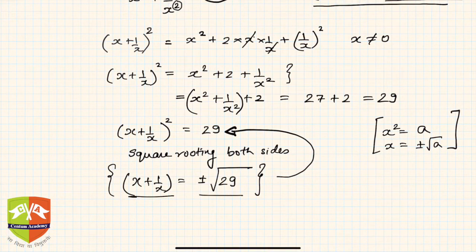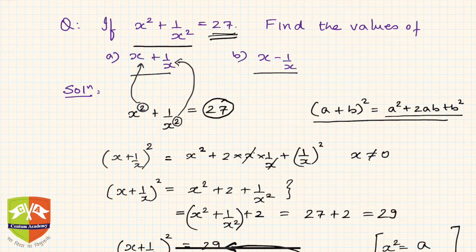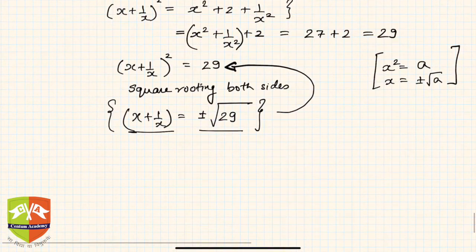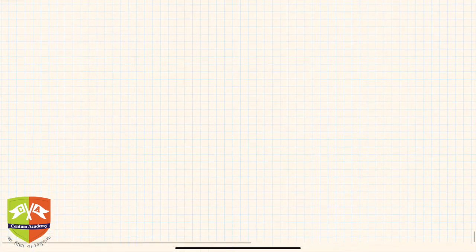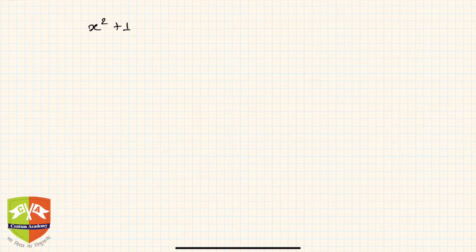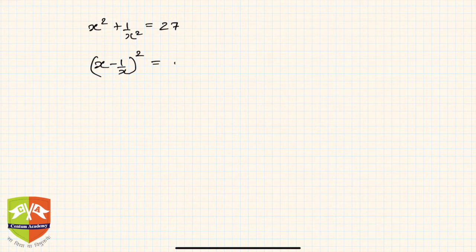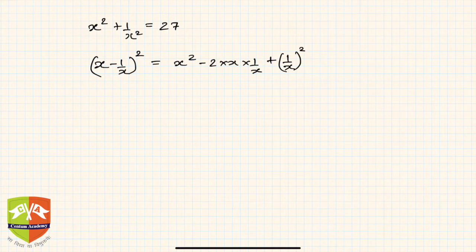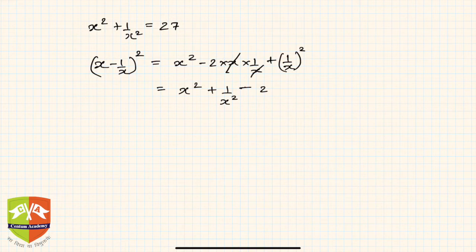So x plus 1 by x equals plus or minus root 29. Now let's get to the second question: find x minus 1 by x, with the same given condition that x squared plus 1 upon x squared equals 27. If you square x minus 1 by x, you get x squared minus 2 times x times 1 upon x, plus 1 upon x whole squared. This equals x squared plus 1 upon x squared minus 2, since x is not equal to 0 so x cancels.